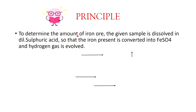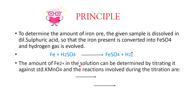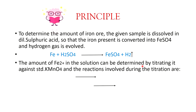Now let's go to the principle. The given sample is dissolved in dilute sulfuric acid so that the iron present is converted into FeSO₄ and hydrogen gas is evolved. The amount of Fe²⁺ in the solution can be determined by titrating it against standard KMnO₄.